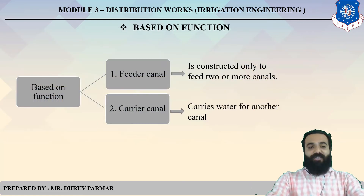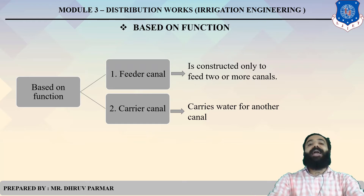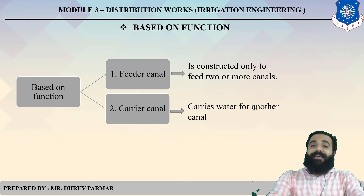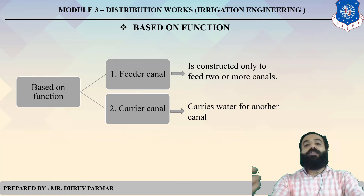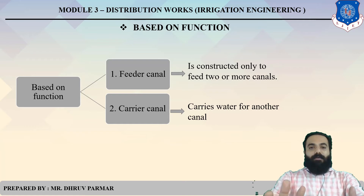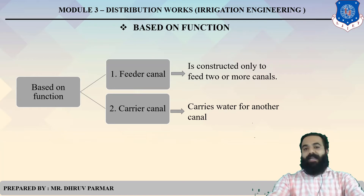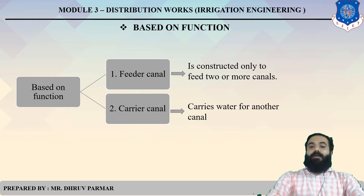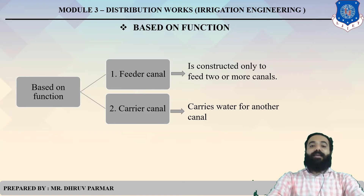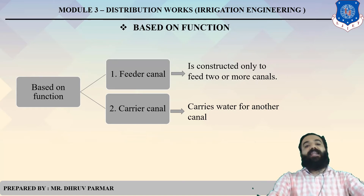Based on function, there are two types: Feeder Canal and Carrier Canal. Feeder Canal means 'to feed' or 'to provide' — the main canal provides water to sub-canals, so the main canal is called the Feeder Canal. For example, the Narmada Canal supplies water to sub-canals, so the Narmada Canal is called the Feeder Canal. A Carrier Canal is a canal that carries the water.